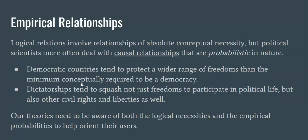Empirical relationships are something else entirely. Logical relations involve relationships of absolute conceptual necessity. For example, if I say that a bachelor is an unmarried man, that's a logical necessity — that's part of the definition. Political scientists, though, like to look at other kinds of relations than just definitional ones. In particular, we look at causal relationships. And causal relations, at least in social science, tend to be probabilistic in nature. That means it's not a 100% cause-and-effect relationship — it's just a more likely-than-not kind of relationship. Most of the time, if you see X, then you'll also see Y. That's a probabilistic relationship.